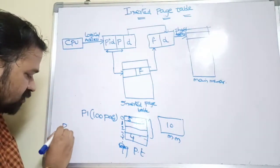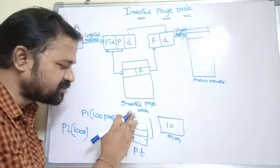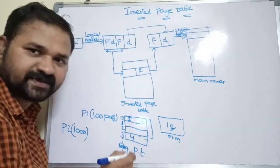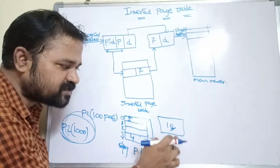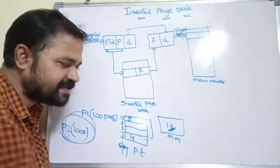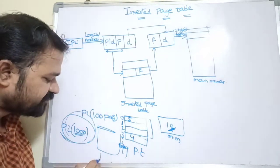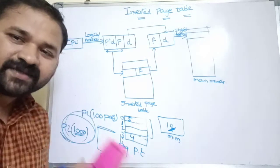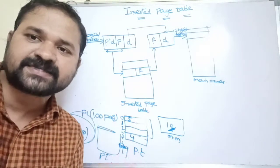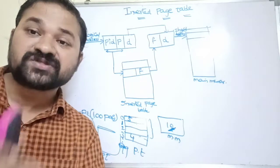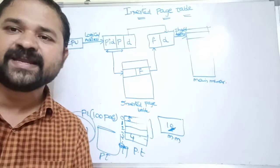Now consider one more process, P2, whose size is 1000 pages. Assume that here also main memory contains only 10 pages. Even then, the page table contains all 1000 pages' information. So what we are doing is the page table contains all pages' information even though those pages don't reside in main memory — meaning we are not utilizing the page table space in an efficient manner.